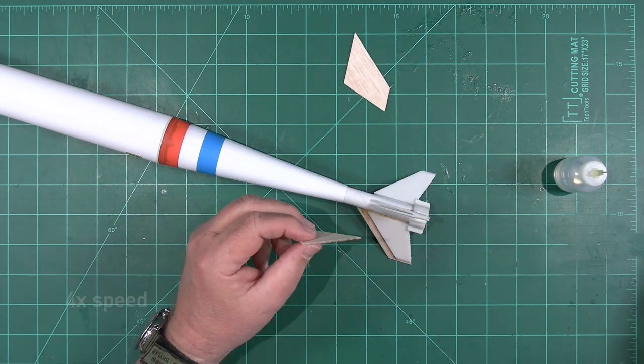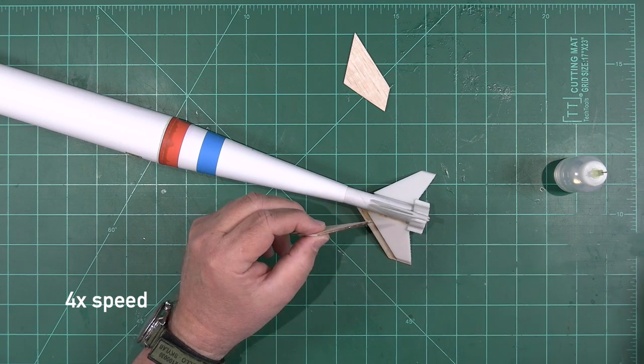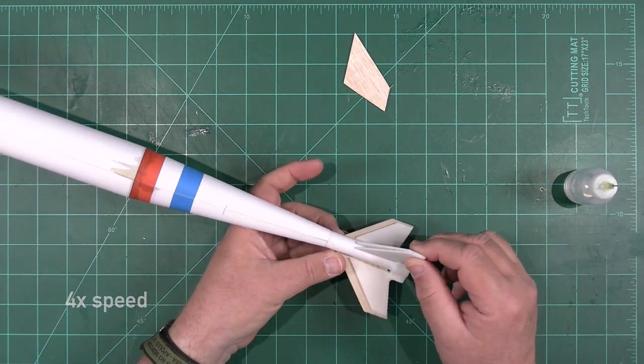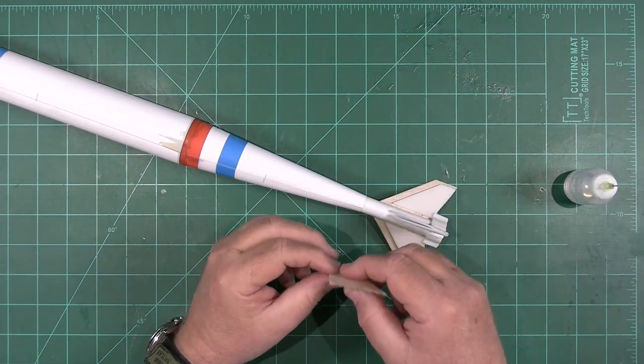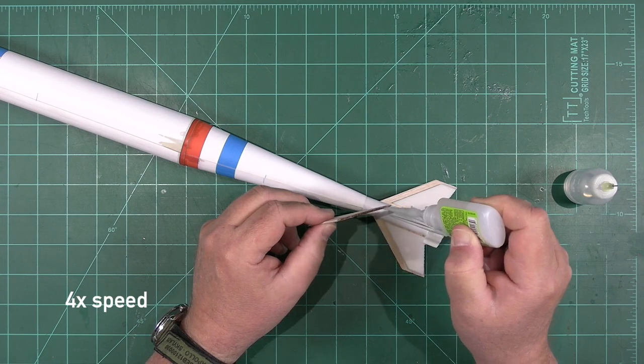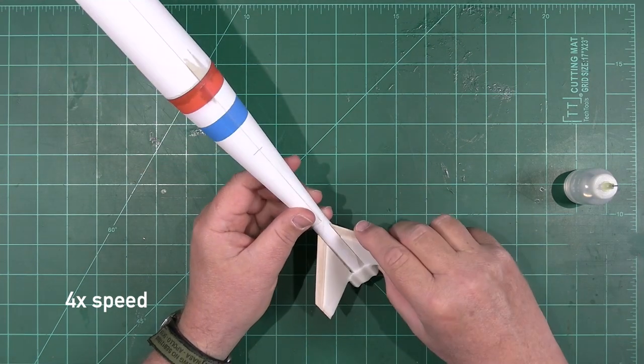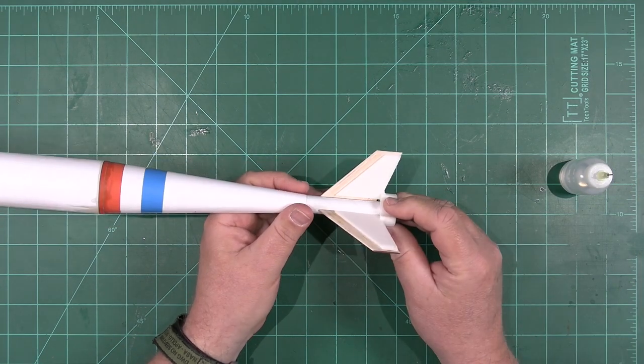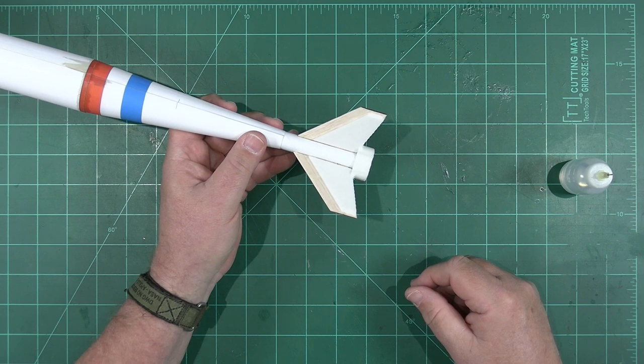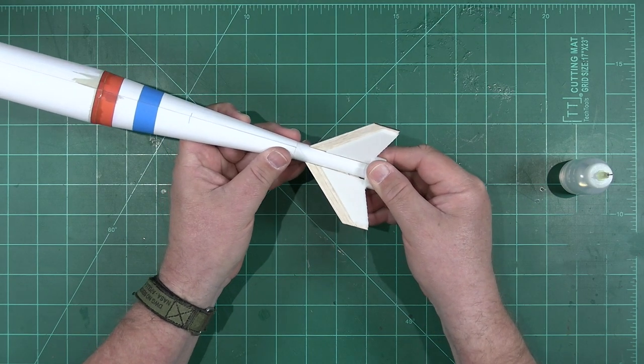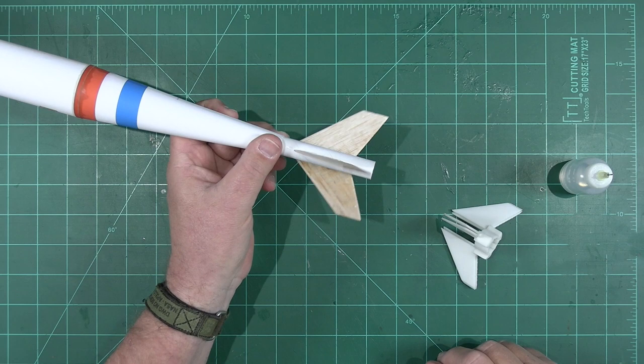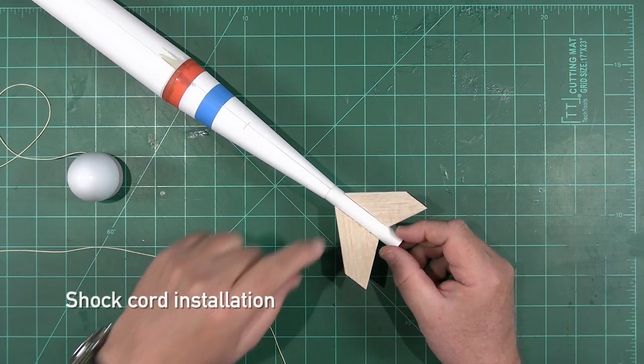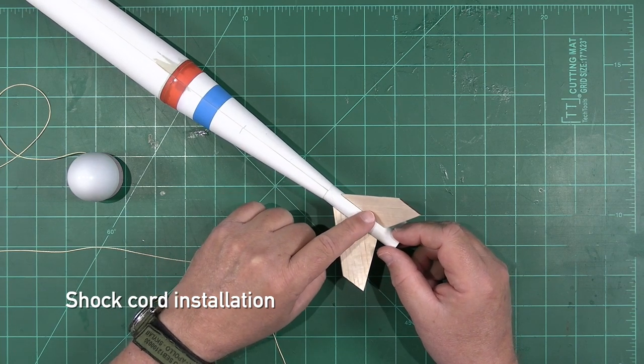Same process. And our final fin. We'll let the adhesive set up for a few moments. And now we can remove our jig. And our fins are perfectly aligned. We still need to reinforce the fin joints, and we'll apply some fillets here in a moment.